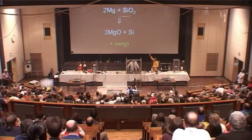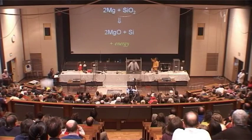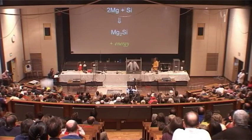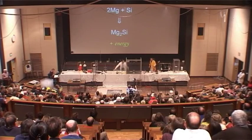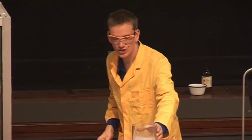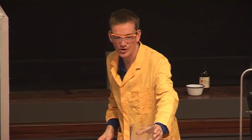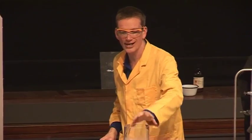The silicon that's formed here can react with more magnesium, and it forms magnesium silicide. This was the substance we had in the tube that's still crackling away, forming silane gas as the bubbles come into contact with the air.